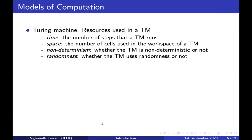There can be three different types of tapes in a Turing machine: the input tape, the work tape, and the output tape. When we count space, it is only the space used in the workspace. The type of the Turing machine is also a resource — for example, whether it's a non-deterministic Turing machine or a randomized Turing machine.